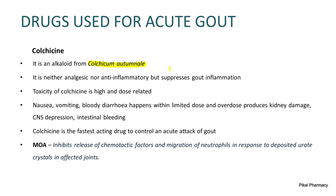Despite these side effects, colchicine is the fastest-acting drug to control an acute attack of gout. Its mechanism of action involves inhibiting the release of chemotactic factors and migration of neutrophils in response to urate crystal deposition in affected joints. By inhibiting chemotactic factor release, there is no neutrophil migration, no generation of inflammation, and therefore no pain.